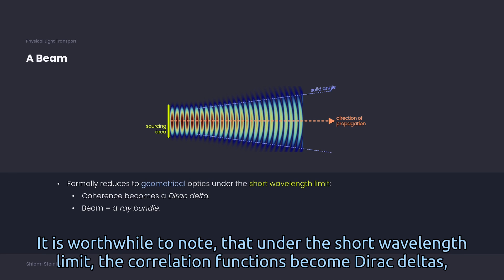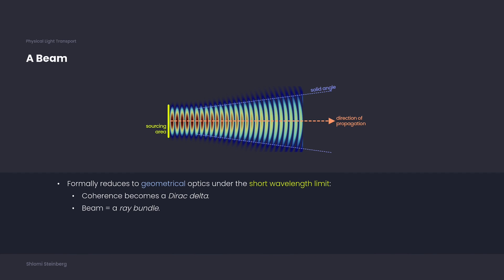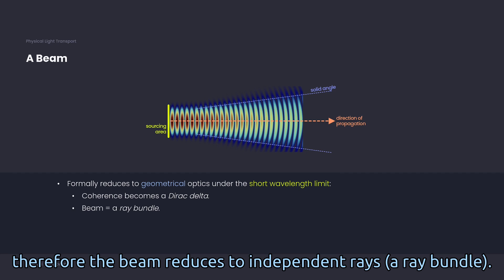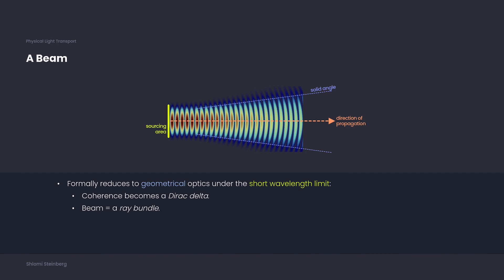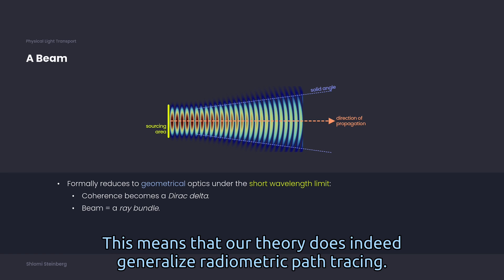It is worthwhile to note that under the short wavelengths limit, the correlation functions become Dirac deltas. Therefore, the beam reduces to independent rays, a ray bundle. This means that our theory does indeed generalize radiometric path tracing.